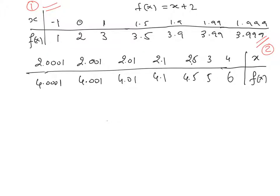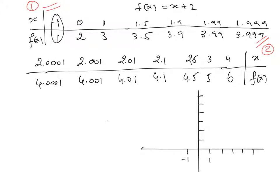We can continue finding values of the function as x approaches 2 for as many values as we want. Now we will graph f(x) around x = 2 to understand graphically what is happening at that point.